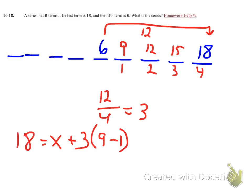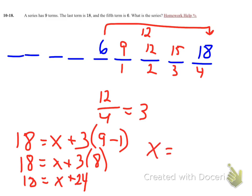And I can now solve this for x. So I have 18 equals x plus 3 times 8. So 18 equals x plus 24. So x will equal negative 6.